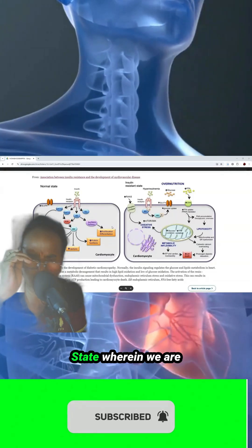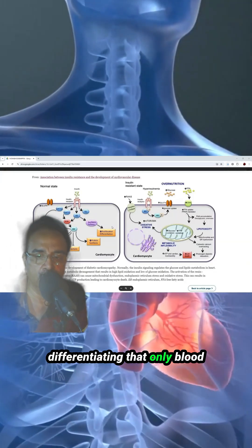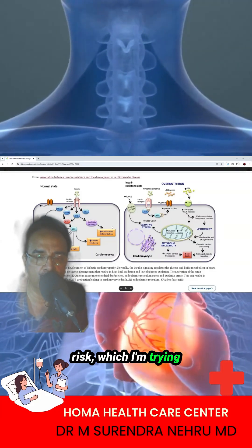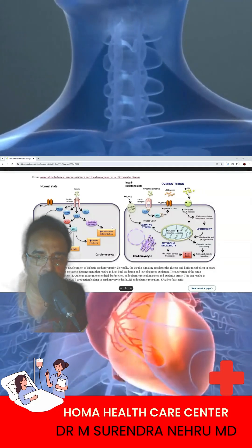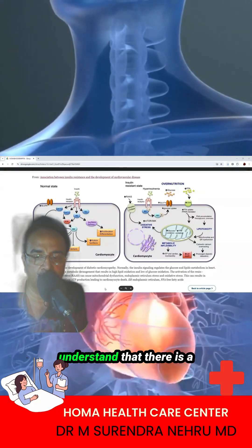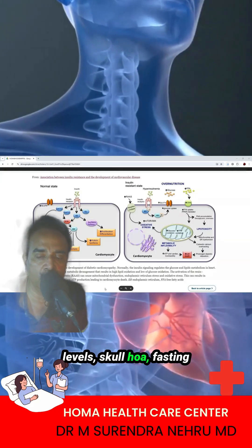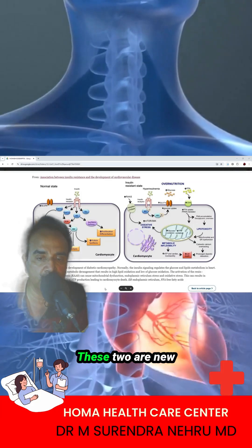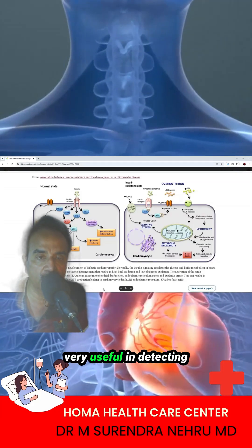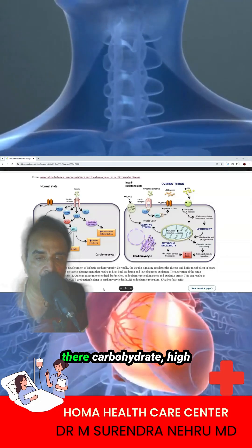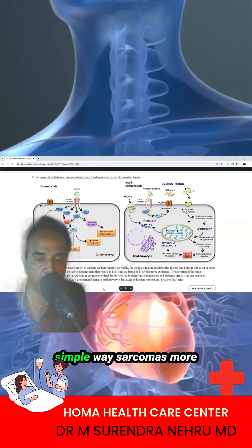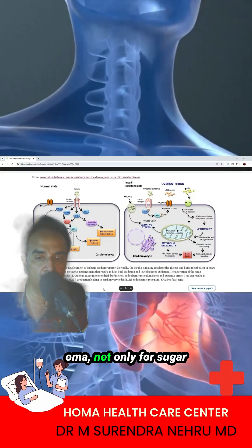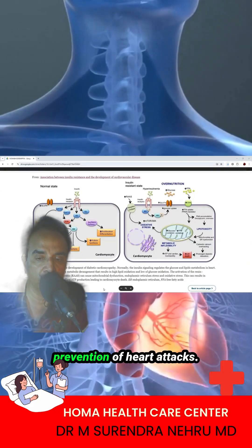We are still in a primitive state where we only call a patient diabetic if blood sugar or HbA1c is high. This is called cardiometabolic risk. Every doctor should understand the link between fasting insulin levels measured by HOMA IR — fasting insulin to fasting blood sugar divided by 405 — and the triglyceride-to-glucose index. These two are new biomarkers useful for detecting early-stage risk in India, Asia, and China where high carbohydrate diets are common. A simple waist circumference of more than 85 cm is also a risk factor for heart attacks. Start using the fasting insulin HOMA test not only for diabetic patients but also for prevention of heart attacks.